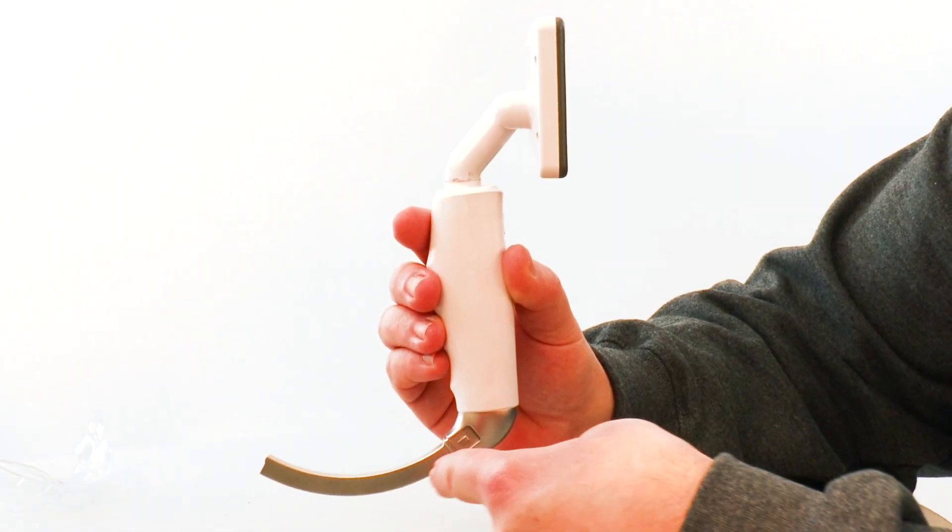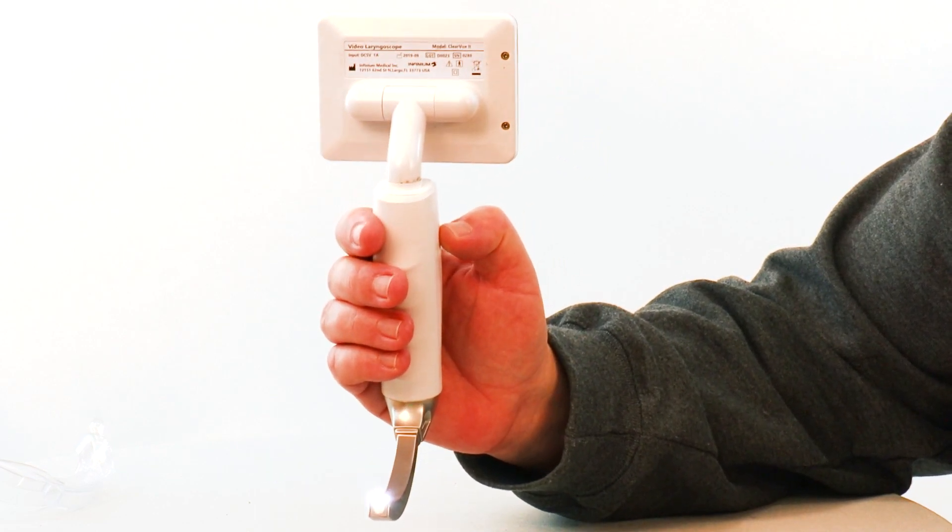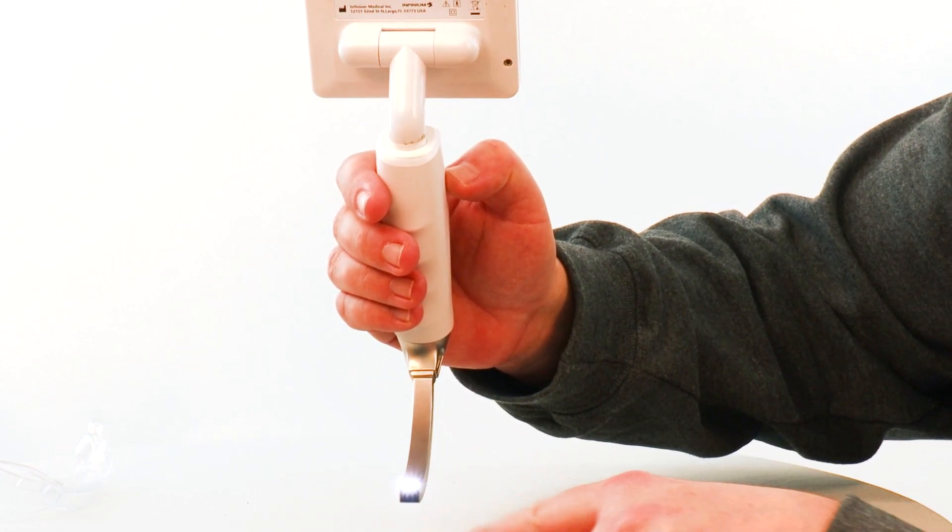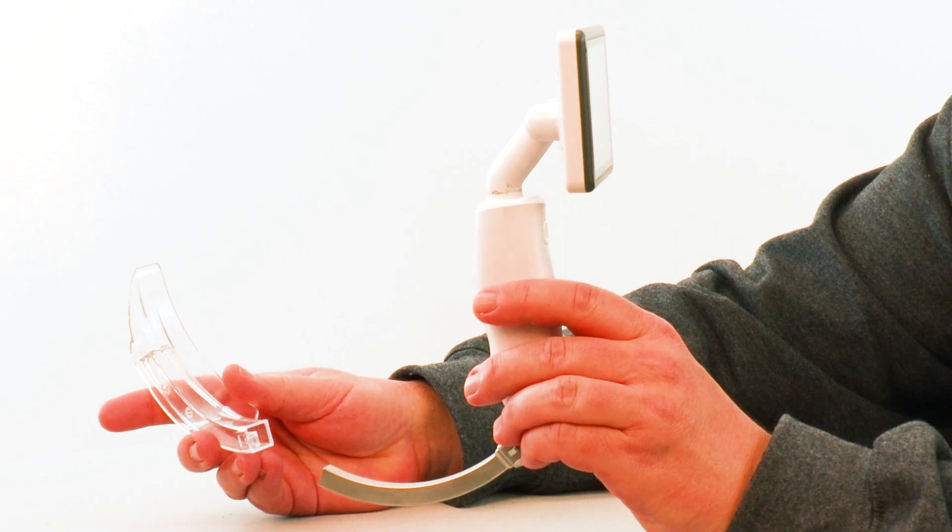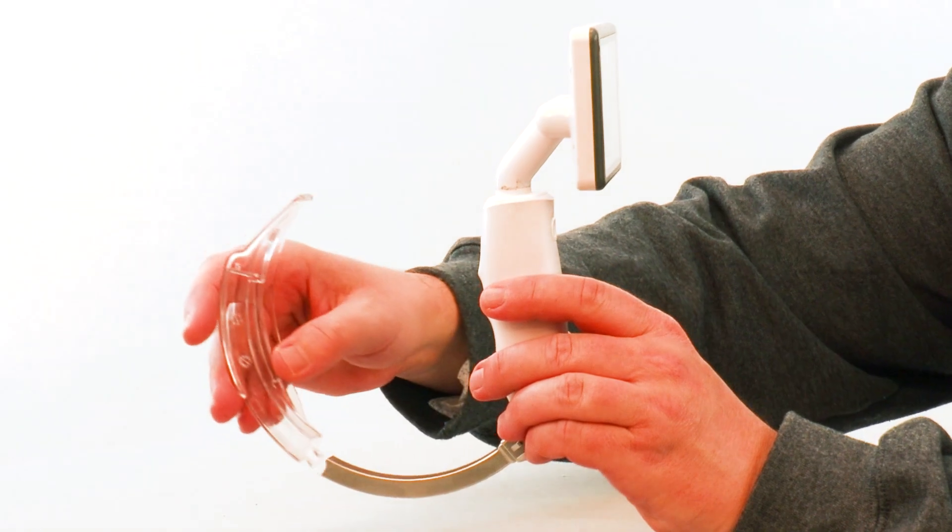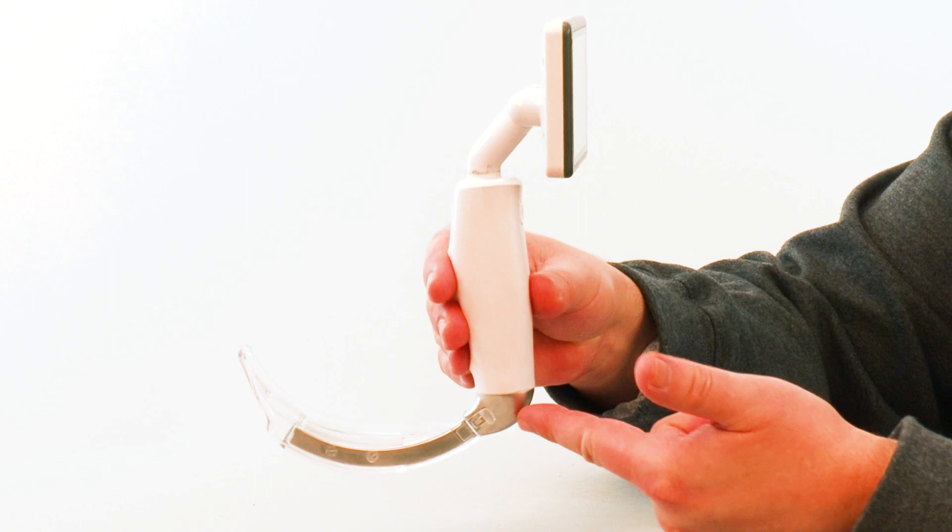Moving downward is a fixed steel Macintosh style wand with a 2.0 megapixel full view camera featuring automatic anti-fogging and LED lighting. Single-use disposable blades are available in five sizes and are easily attached to the wand.